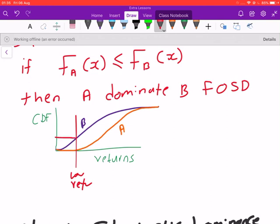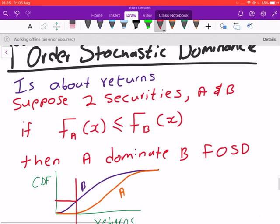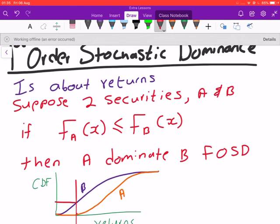So A has a probability of yielding higher returns than B, and therefore A, because it has a higher probability of yielding higher returns than B, is stochastically dominant to B on the first order. So what if all this is not very clear for you? What if this curve, they intertwine?